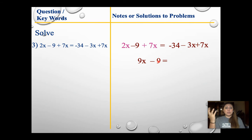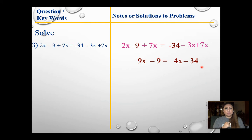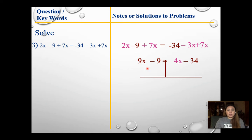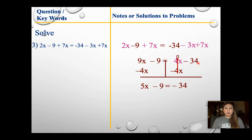Let's bring back the right side and simplify it. Do I need to distribute? No. Can I combine like terms? Yes — I see a negative 3x and a positive 7x. Different signs, so we subtract. 7 minus 3 gives me 4x, and it's positive because the 7 is bigger. Nothing happened to the negative 34, so I bring it down. Now I bring back the left side. Looking at the variables, 4x is smaller than 9x, so that's the one I want to move. I subtract 4x from both sides. 9 minus 4 gives me 5x, negative 9 comes down, 4x and negative 4x cancel, and I bring down negative 34.